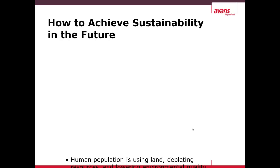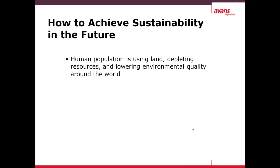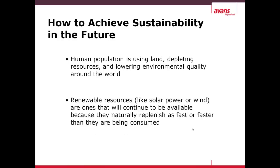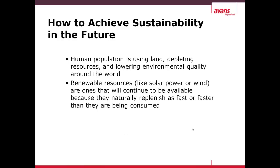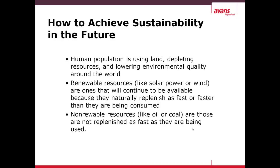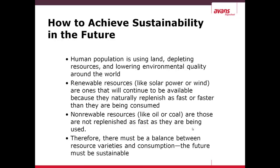How to achieve sustainability in the future? Human population is using land, depleting resources, and lowering environmental quality around the world. Renewable resources such as solar power or wind are ones that will continue to be available because they naturally replenish as fast or faster than they can be consumed. Non-renewable resources like oil or coal are those that are not replenished as fast as they are being used — the flux out is greater than the flux in. Therefore, there must be a balance between resource varieties and consumption. The future must be sustainable.